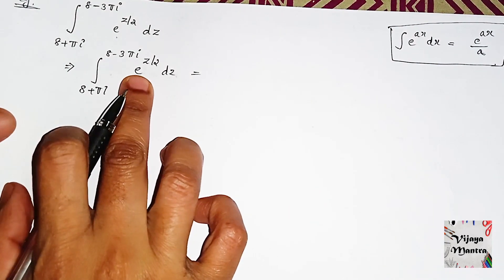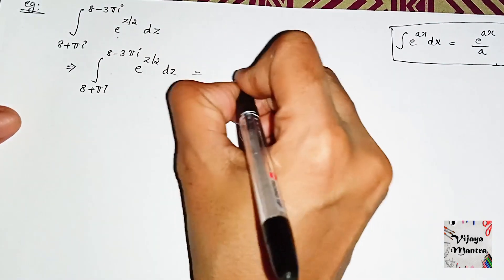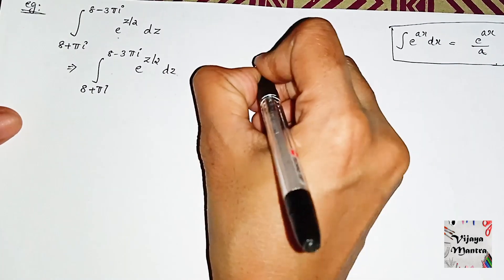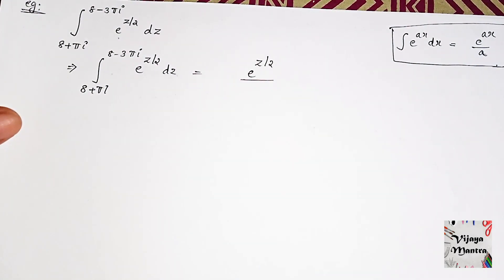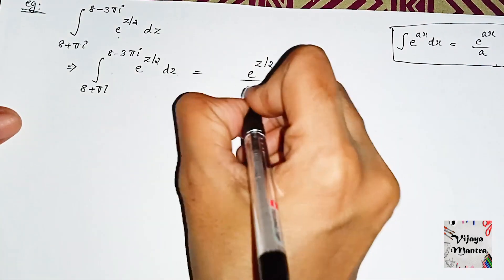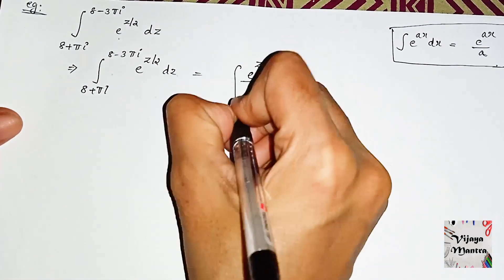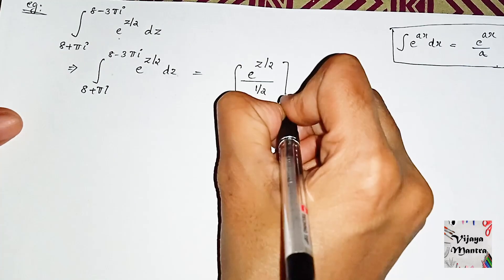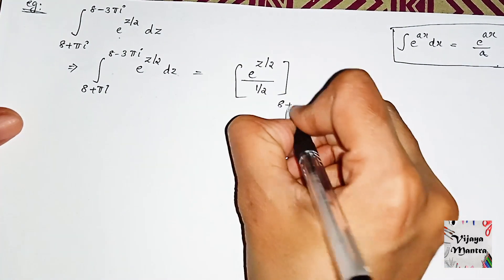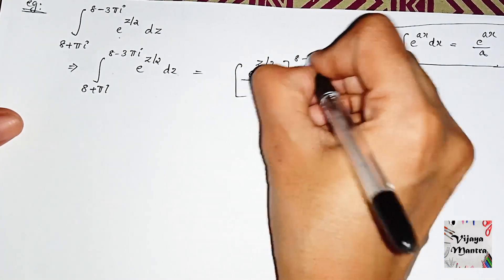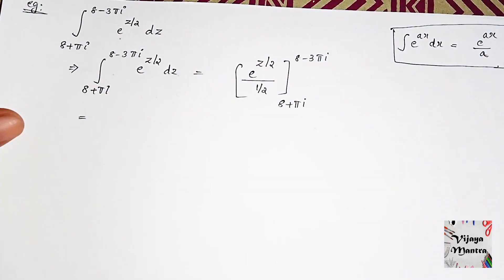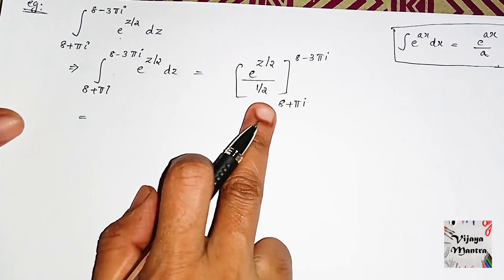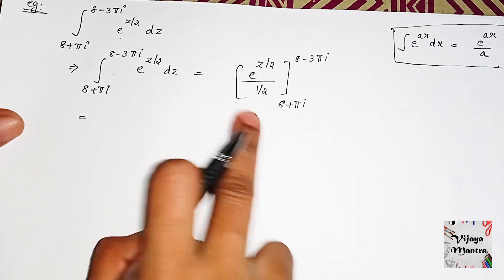Using the formula: integral of e^(ax) dx equals e^(ax) divided by a. Here a is the constant value 1/2, so the integral of e^(z/2) equals e^(z/2) divided by (1/2), which is 2·e^(z/2). We then apply this from upper limit to lower limit.